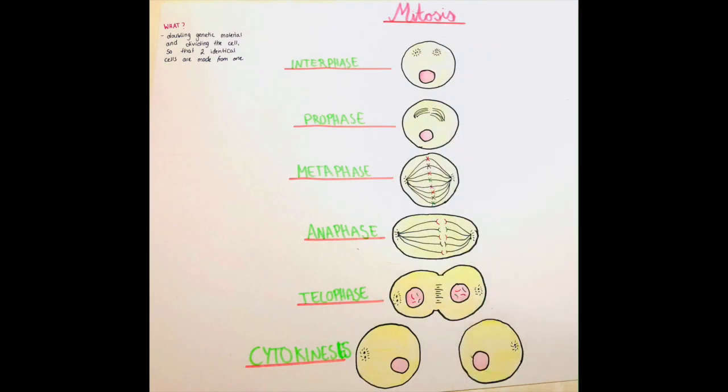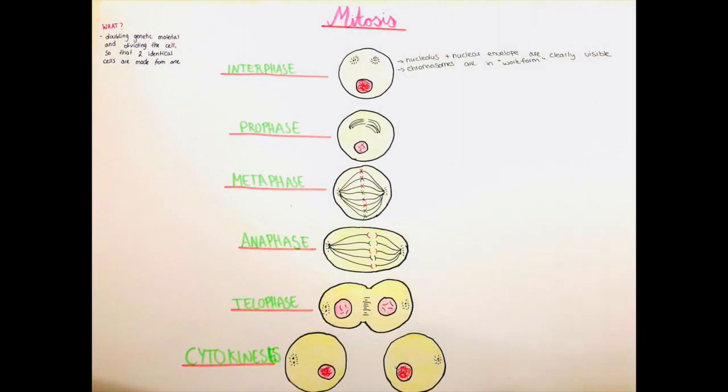So it has different phases which I will explain now one after the other. The first one is the interphase, in which the chromosomes are in the work form so they're dispersed all over the nucleus. Also the nucleus and the nuclear envelope are clearly visible. You can see them here in the smaller circle within the cell.